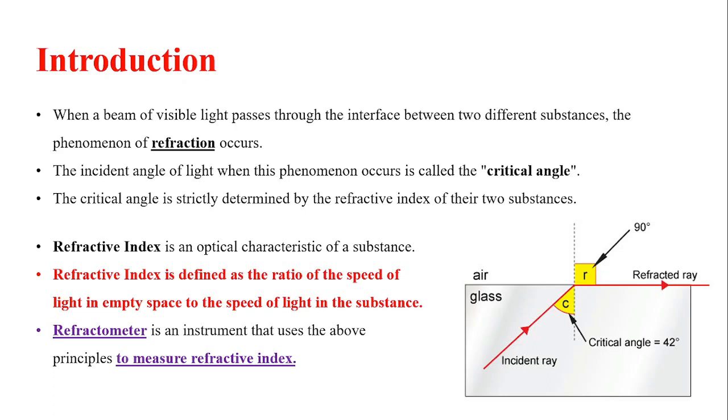Refractive index is defined as the ratio of the speed of light in empty space to the speed of light in the substance. For determining the refractive index, we will be using a refractometer, which is an instrument that uses the above principles to measure refractive index.